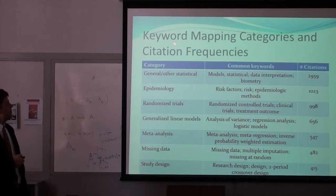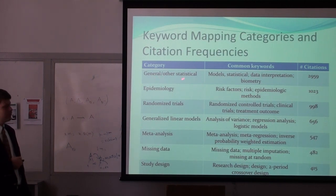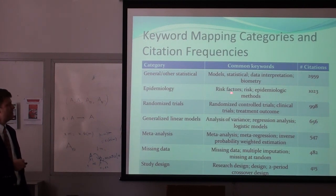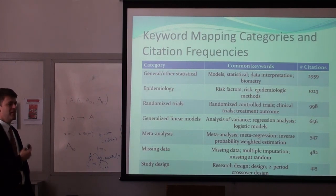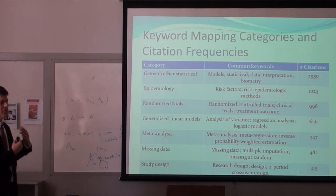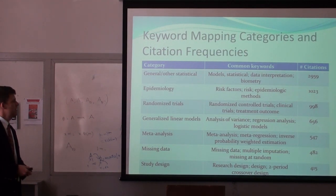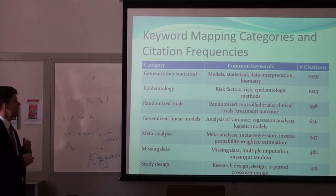These are the findings from the keyword mappings. Not really surprising — very general terms like 'models' and 'data interpretation' actually had the highest number of citations. Epidemiology — the study of risk factors for disease in people — had a lot of citations, which makes sense for internal medicine. Studying heart disease, diabetes, hypertension — so it's not surprising that epidemiology is high. Randomized trials were high, and meta-analysis too. Missing data is another topic that's getting a lot of attention.